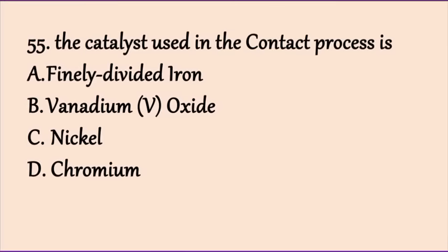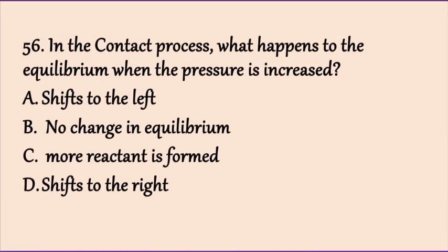Question 55: The catalyst used in the contact process — the contact process is used to manufacture sulfuric acid. The catalyst is vanadium pentoxide, V₂O₅. The answer is B.